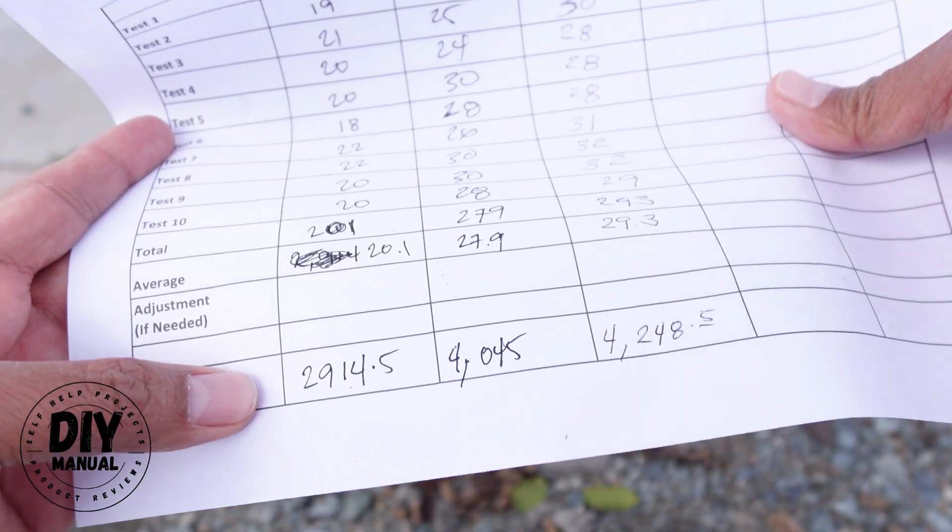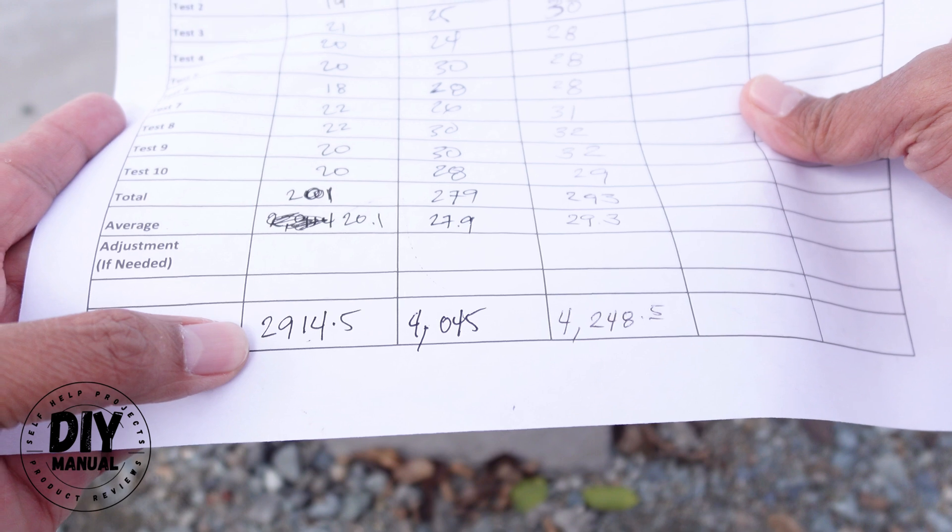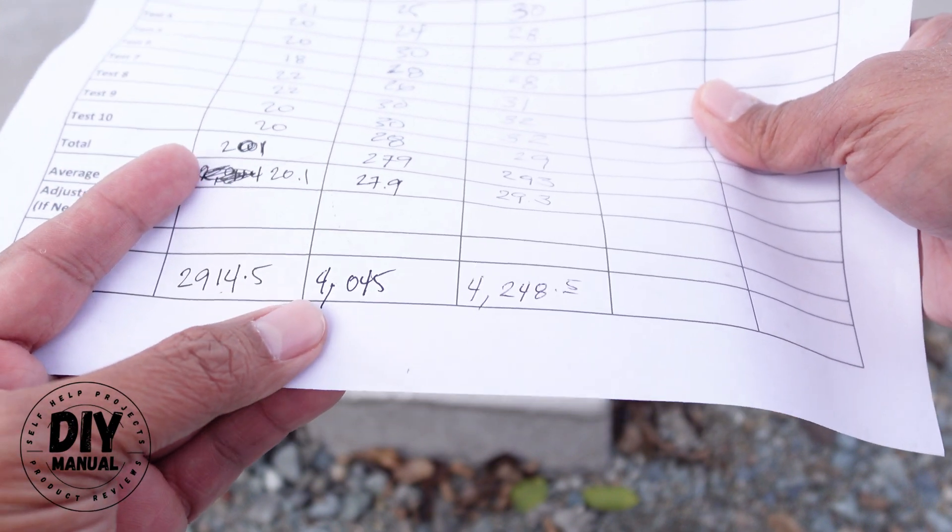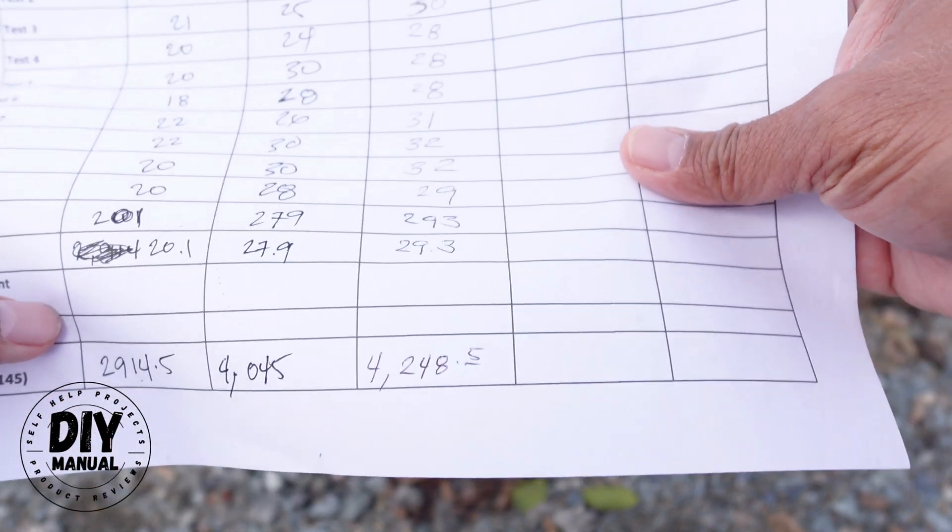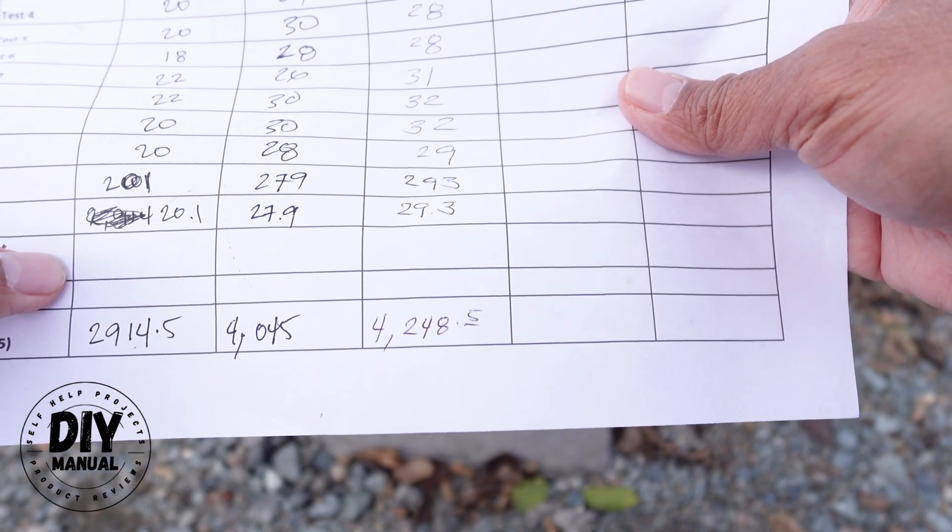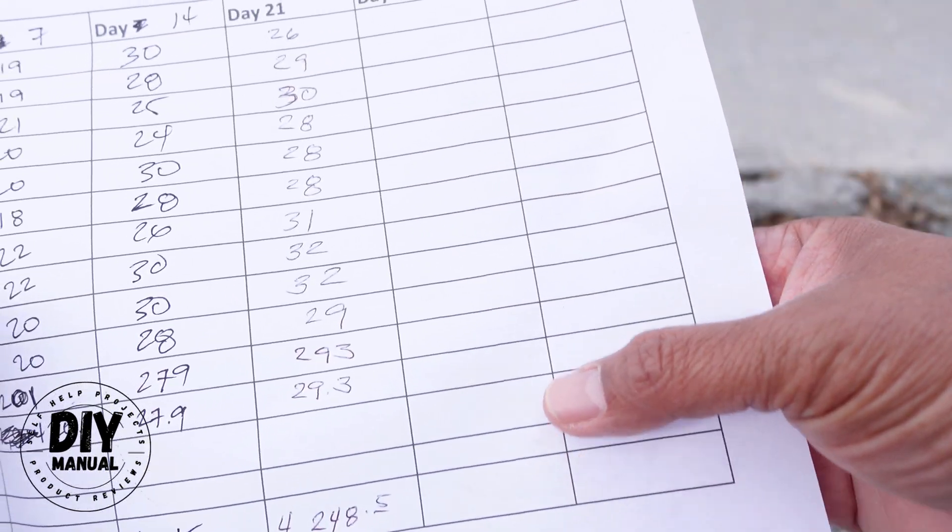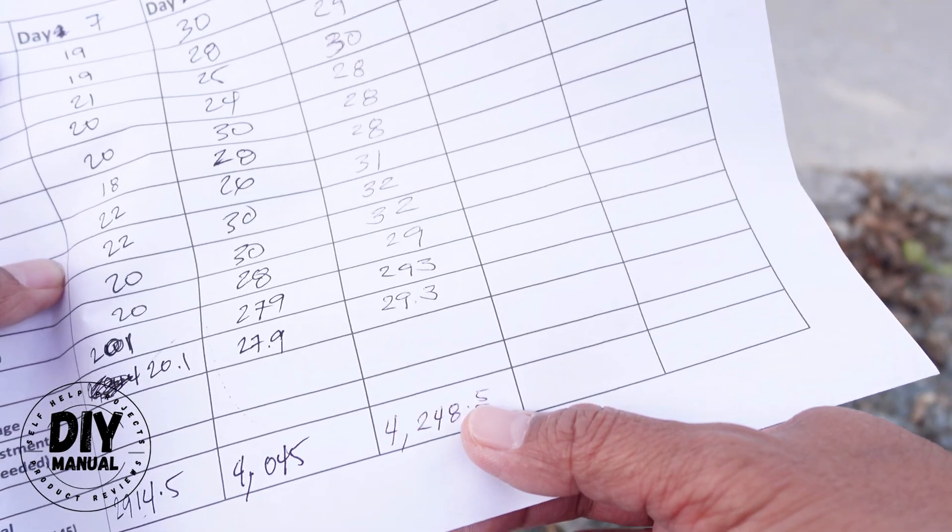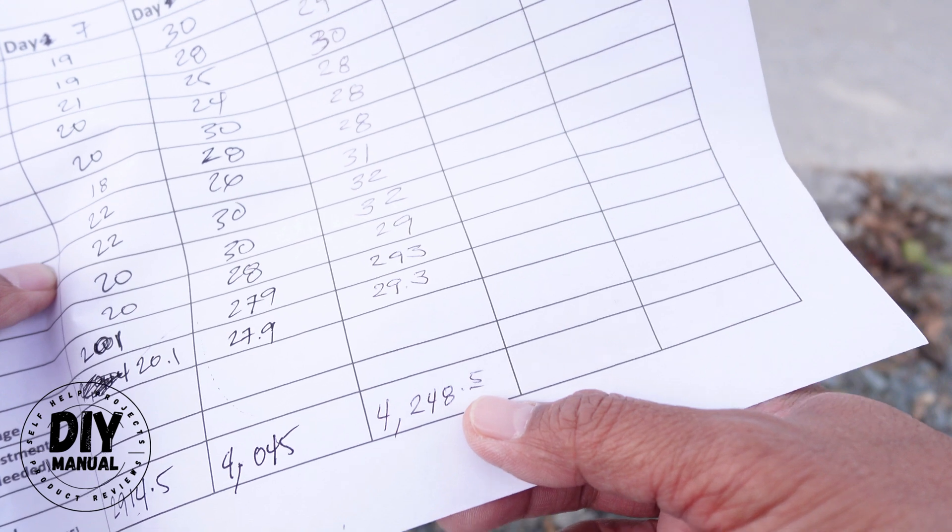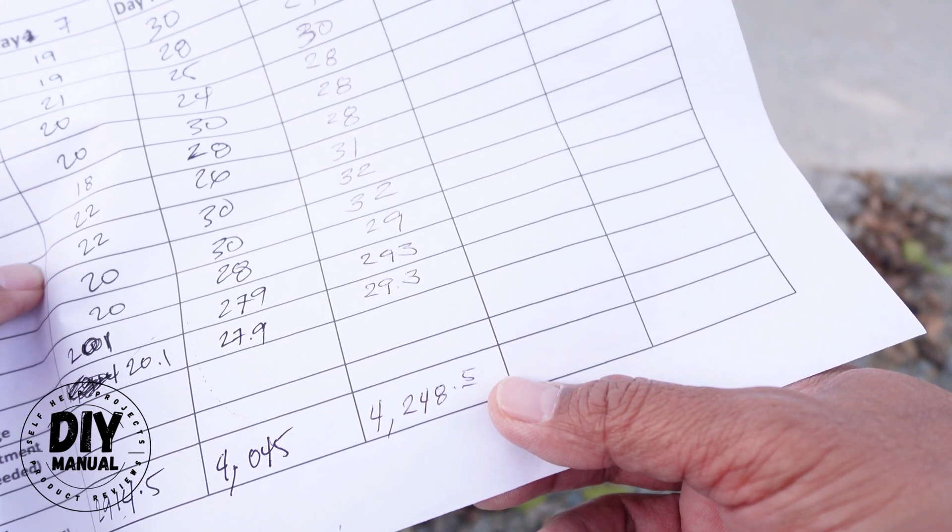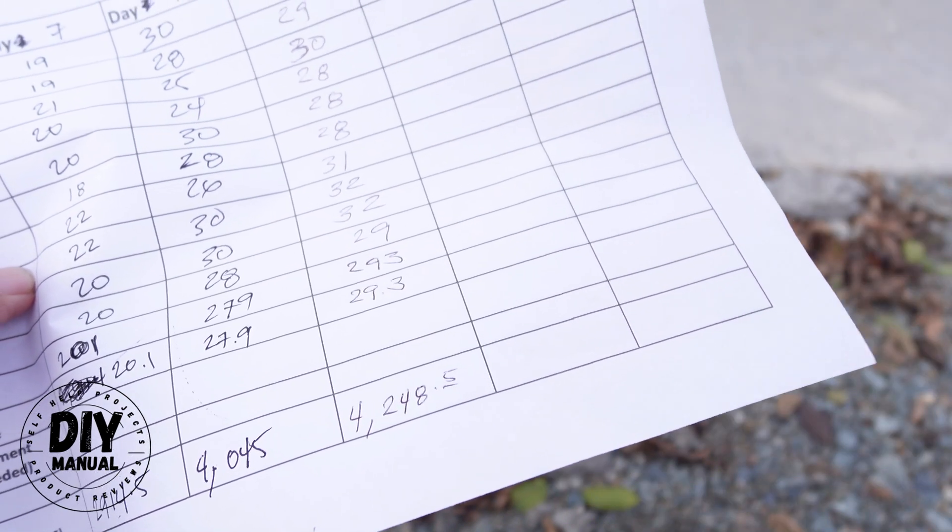So on day 7 for this wet pour concrete, we got 2,914.5. On day 14, we got 4,045. And on day 21, we got 4,248. So we're going to do another test next week. And hopefully, our regular mixed concrete will reach up to 4,500 PSI because that is the rating for that concrete.